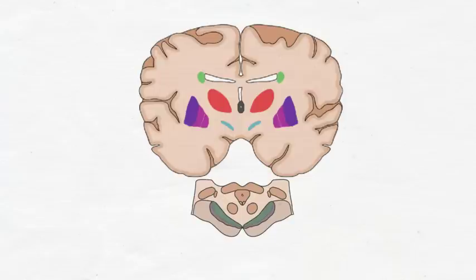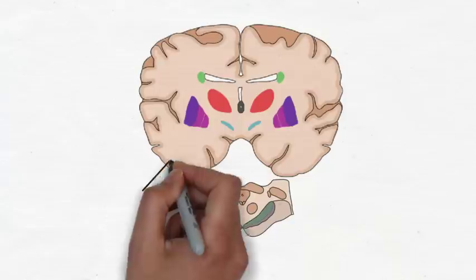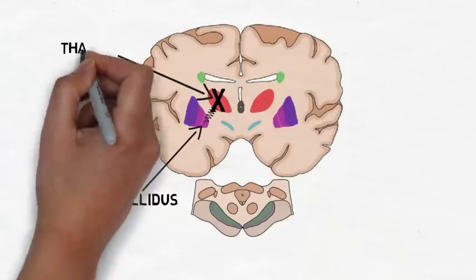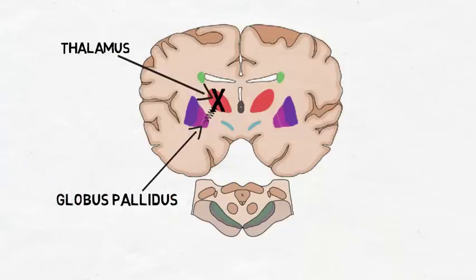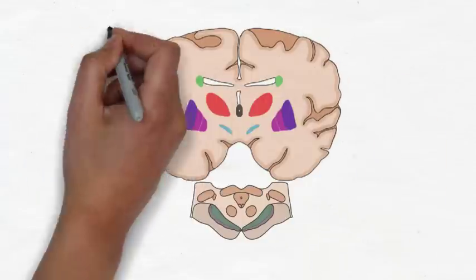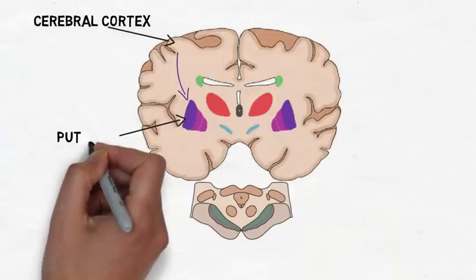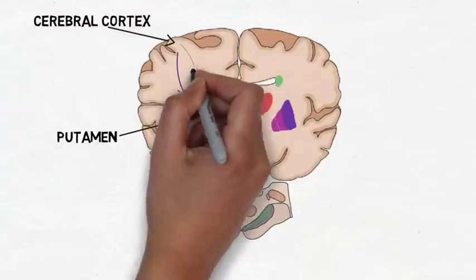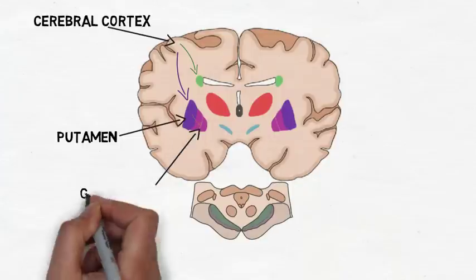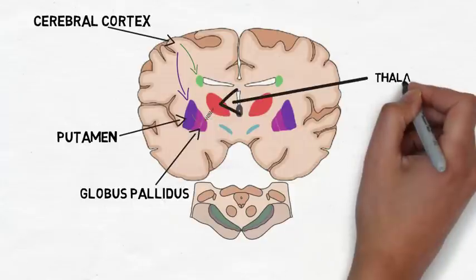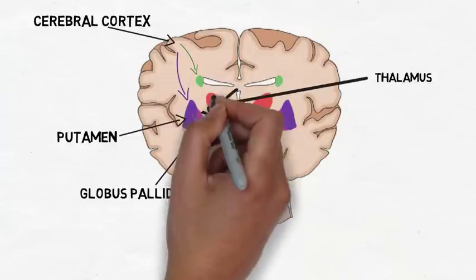According to this model, the main output of the basal ganglia is inhibitory, and neurons in the globus pallidus are constantly inhibiting the thalamus to prevent unwanted movements. When a signal to initiate movement is sent from the cortex to the basal ganglia, it follows a circuit known as the direct pathway, which leads to the silencing of neurons in the globus pallidus. This frees the thalamus from the inhibitory effects of the globus pallidus and allows movement to occur.